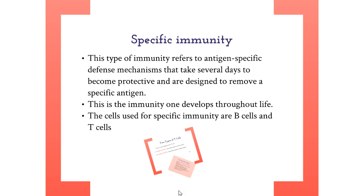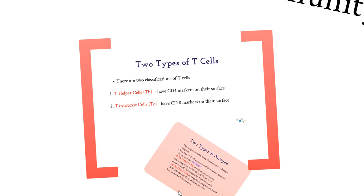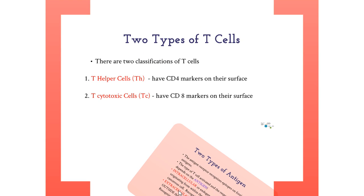In this video, we will review the two types of T cells: T helper and T cytotoxic cells. Each type of T cell plays a unique role in the immune response and can be distinguished from the other by their surface markers.